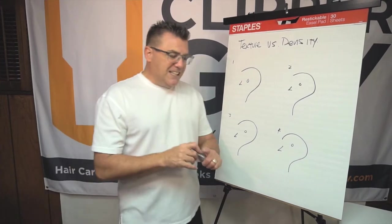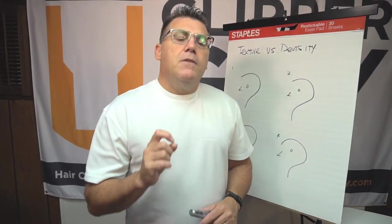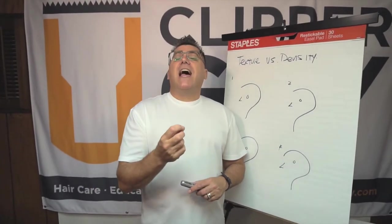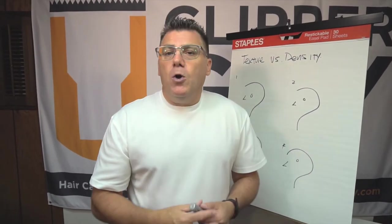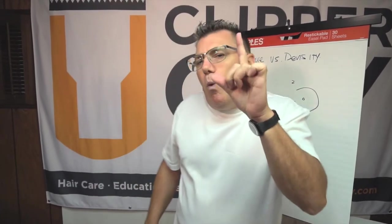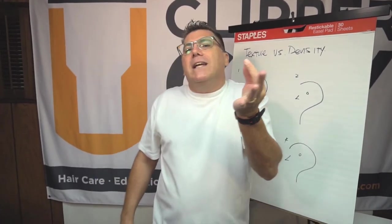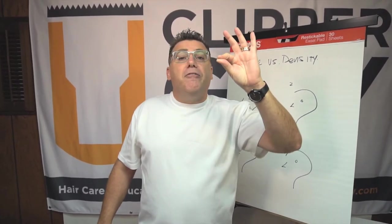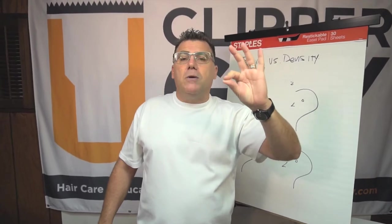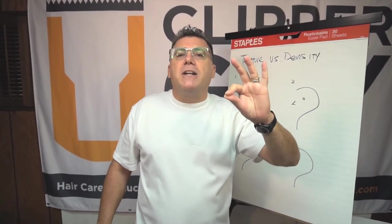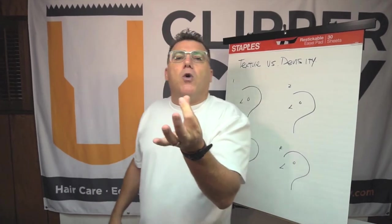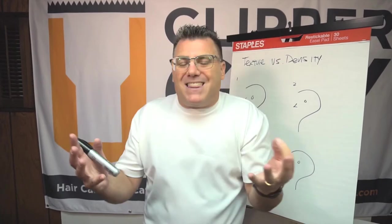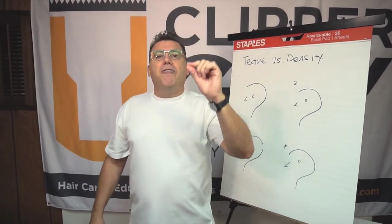So what we want to look at first is texture. Texture is the thread-like quality of hair — think of it as hair diameter. When you think about hair texture, imagine taking one single hair and rolling it between your finger and thumb. Finer hair in terms of its texture — think about a spider web. You put that between your fingers and roll them together, you won't even feel it. It has such a small diameter, it feels like nothing. That is fine hair.